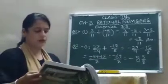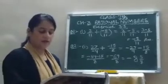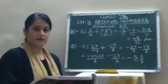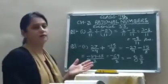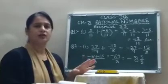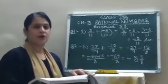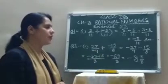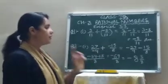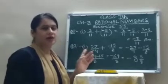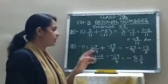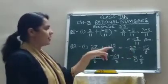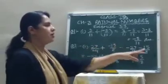Now I will do question number 2, in which the denominators are different. When the denominators are different, just like in fractions, you have to find the LCM. You have to find the sum of 27 upon minus 4 and minus 15 upon 8. First of all, convert to standard form — standard form means you shift the negative sign to the numerator. So it becomes minus 27 upon 4, and plus minus becomes minus 15 upon 8.